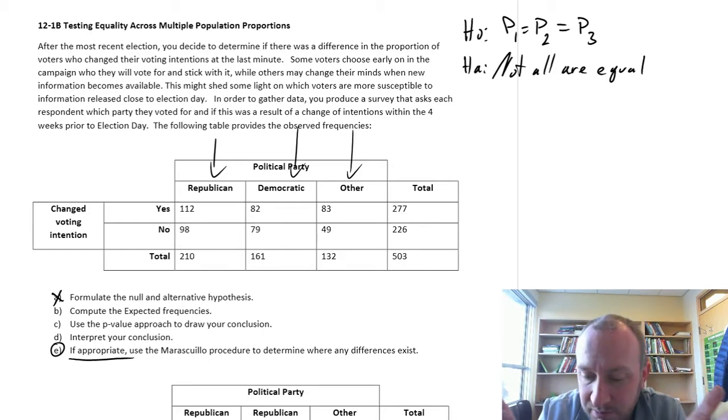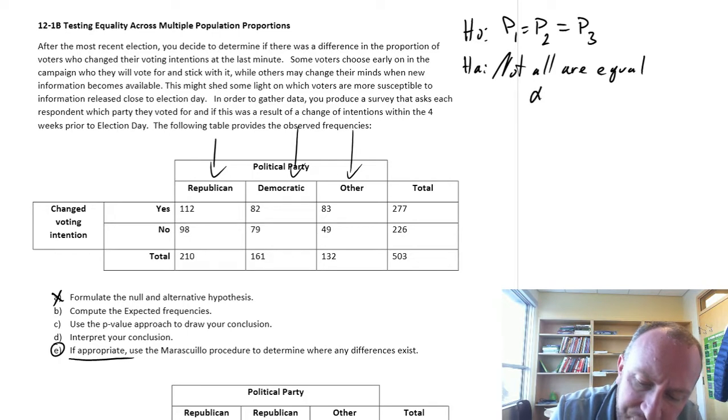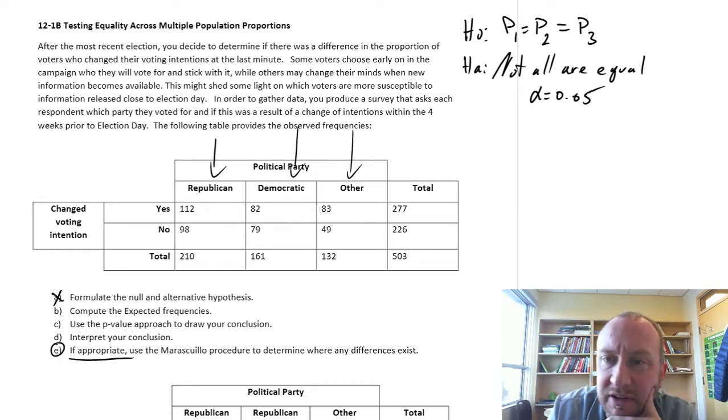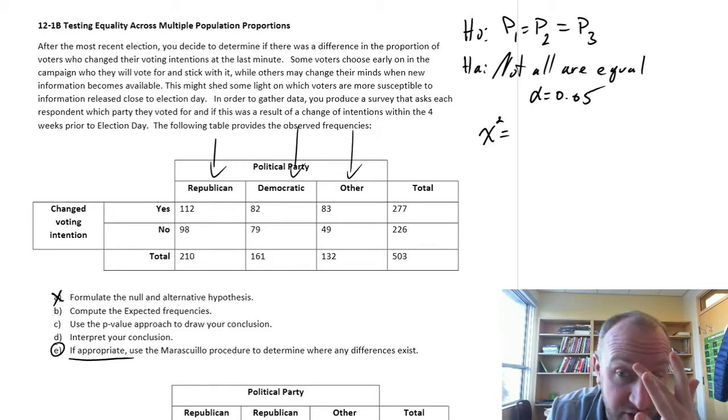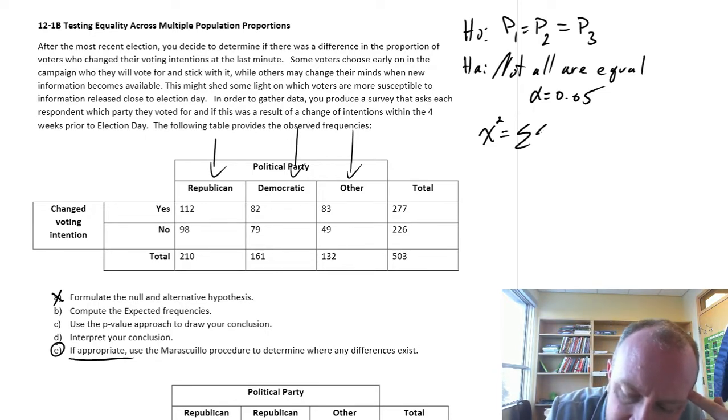Part B, compute expected frequencies. So what that means, so let's specify some level of significance here, alpha 0.05. So our test statistic that we need for this, this is a chi-squared test. Not like when we were looking at two population proportions, it was a simple z-test. Now this is a chi-squared test.